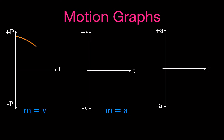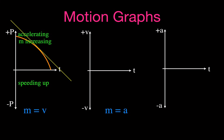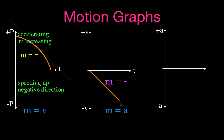The last curve is getting steeper as you go — so it's speeding up. The tangent line has a negative slope, so it's going in the negative direction. This one is speeding up in the negative direction. On the velocity graph, we start at zero and increase into negative velocities. That line has a negative slope, so the acceleration is negative. Negative velocity and negative acceleration have the same sign — confirming it's speeding up.